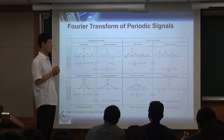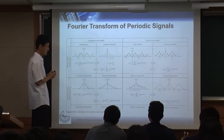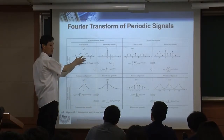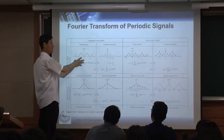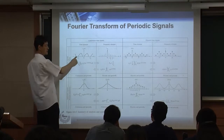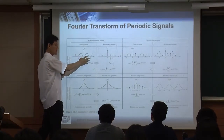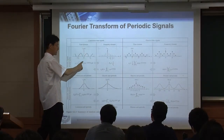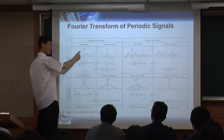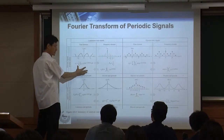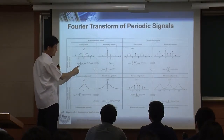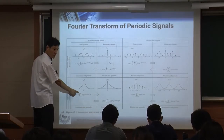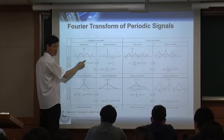Now a special case: still continuous time but the time-domain signal is periodic. You can still do the Fourier transform by integration since this is continuous time. But since the signal is periodic, you integrate over only one period T_P instead of from minus infinity to infinity — it's still an integration.